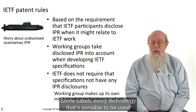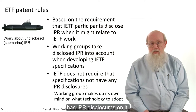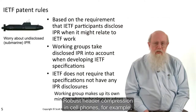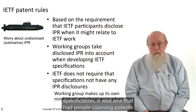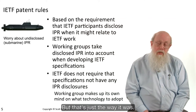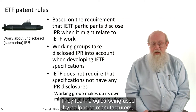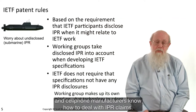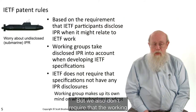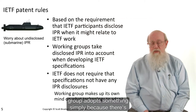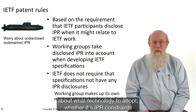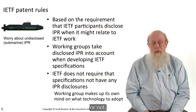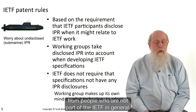Some cases, every technology that's possible to be used has IPR disclosures on it — somebody claims patent rights on it. Robust header compression in cell phones, for example, is that way. When the IETF adopted a robust header compression RFC specification, it was one that had people claiming patents on it, but that's just the way it was. The technology is being used by cell phone manufacturers, and cell phone manufacturers know how to deal with IPR claims. But we also don't require that the working group adopt something simply because there's been a disclosure — that's the reverse. So the working group is allowed to make up their own mind about what technology to adopt, whether it has IPR constraints or not. Note that you won't get IPR disclosures from people who are not part of the IETF in general.